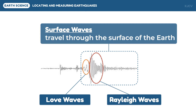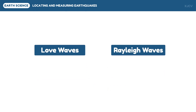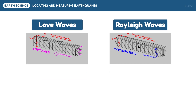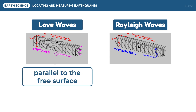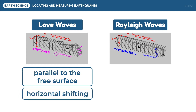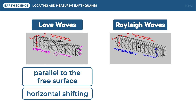Let us further compare the two types of surface waves. As seen in this animation, the particle or ground motion is parallel to the free surface, meaning there is a horizontal shifting. Just like the S waves, Love waves cannot pass through liquids. This is the cause of the damage on buildings and the shearing of the ground.